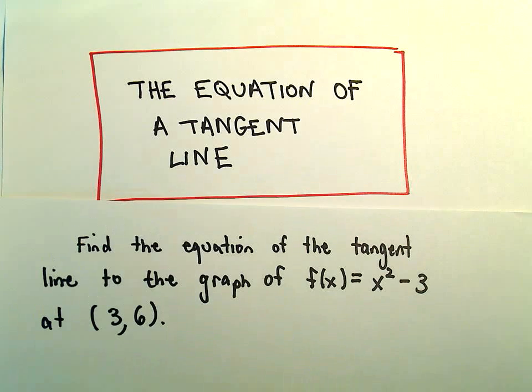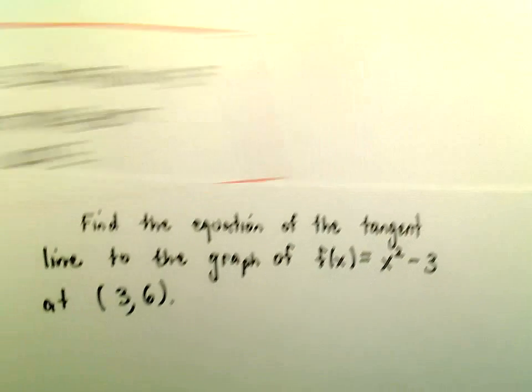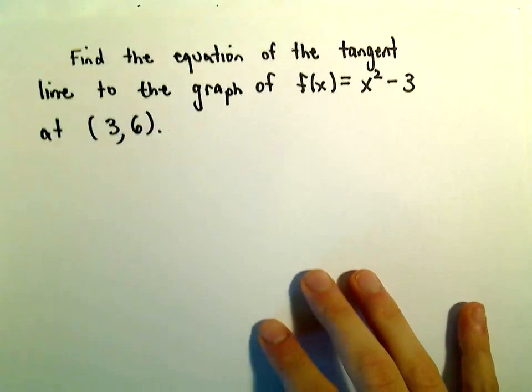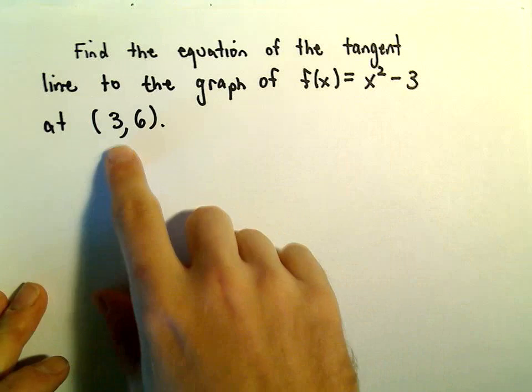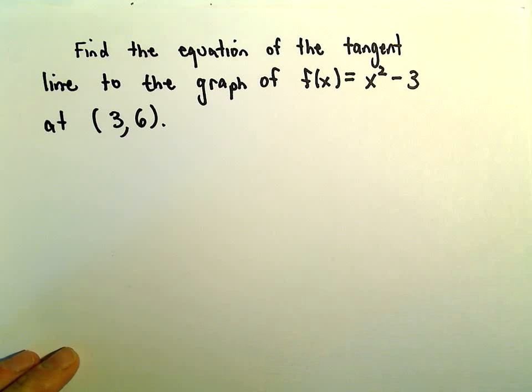Okay, in this video we're going to look at an example of finding the equation of a tangent line. And what we're going to do is we're going to find the tangent line to the graph of f of x equals x squared minus 3 at the point 3, 6.